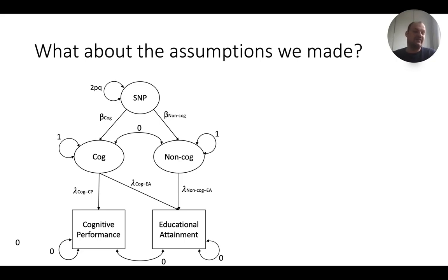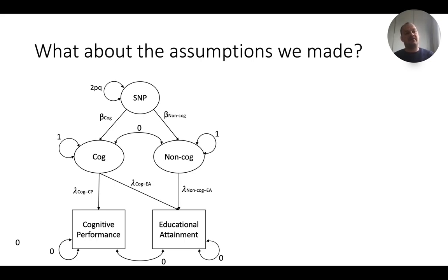The arrow goes from COG to educational attainment. It's really important to consider that in a SEM model, the arrows you draw represent what you think is the causal structure in the world. I am fairly easily convinced that cognitive performance contributes causally to performance in school, though there's obviously debate about it. We can test whether these assumptions are important enough or whether their violation doesn't really influence our results.